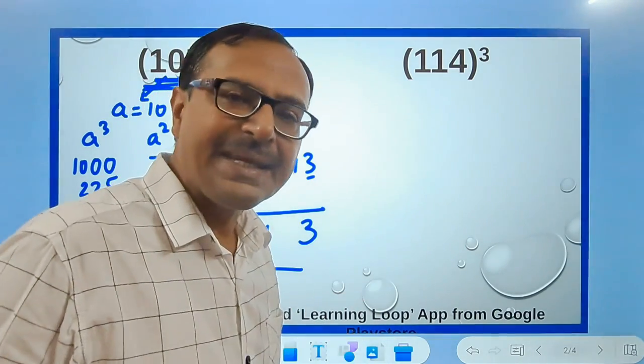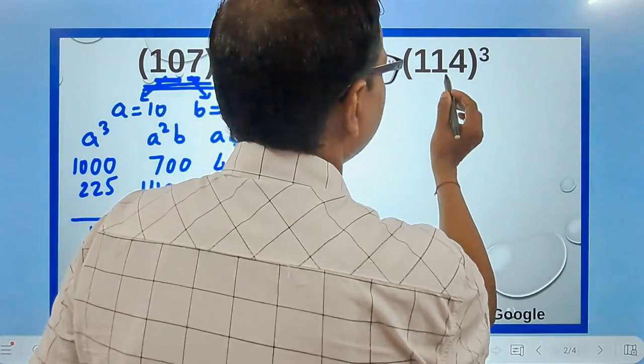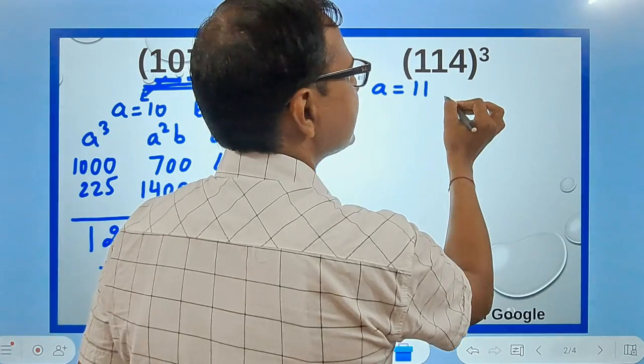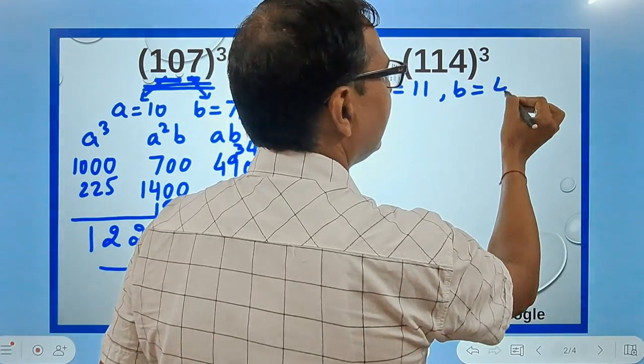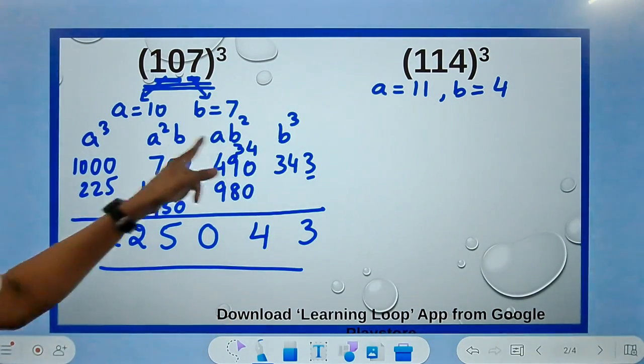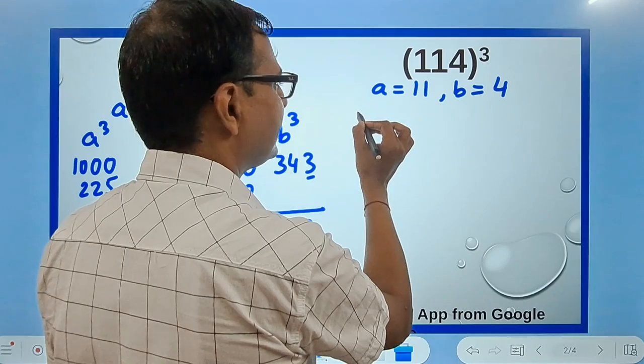Likewise, if you have this number here, a is 11 (the first two digits) and b is 4 (the last digit). So I'll write the four numbers: a³, 11³ is 1331.